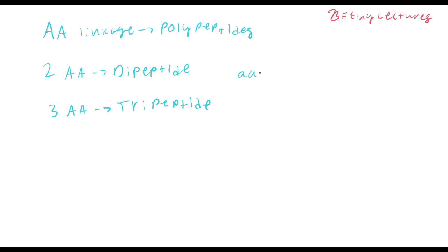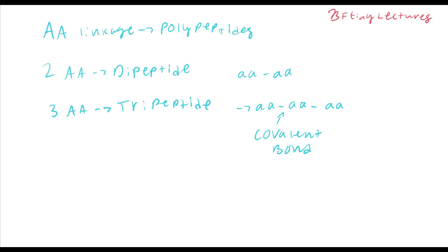Essentially if you have an amino acid linked with this one, that's a polypeptide. And proteins are made from multiple polypeptides. This would give us AA and AA and AA. Now the bond right here is actually a covalent bond.